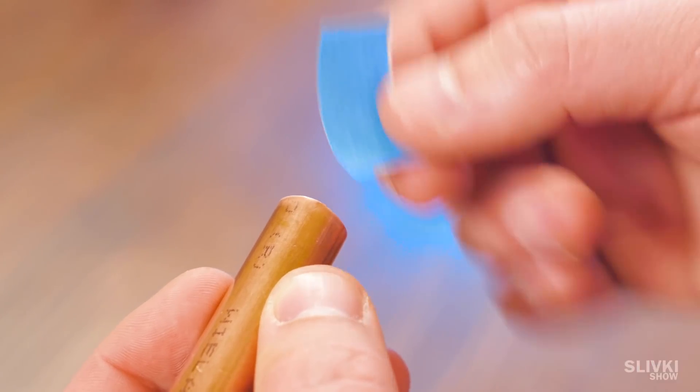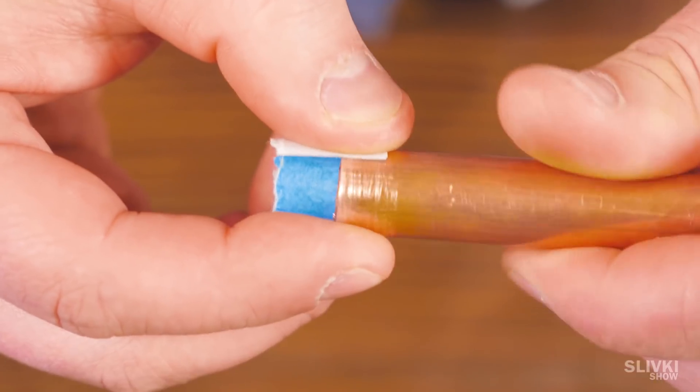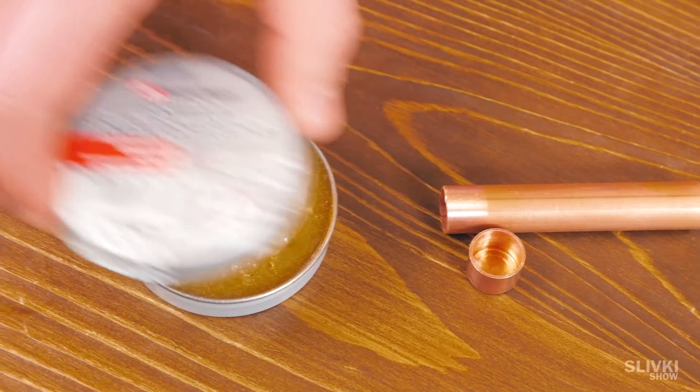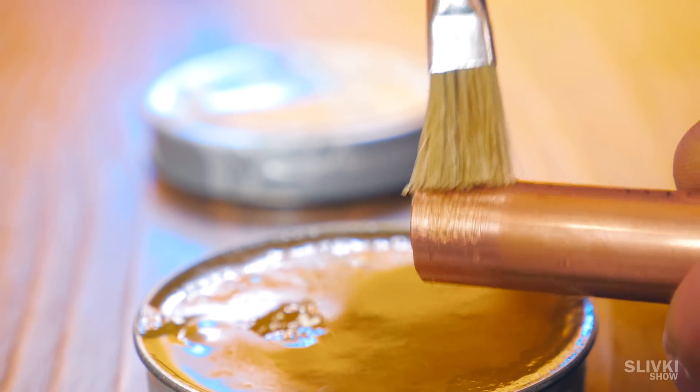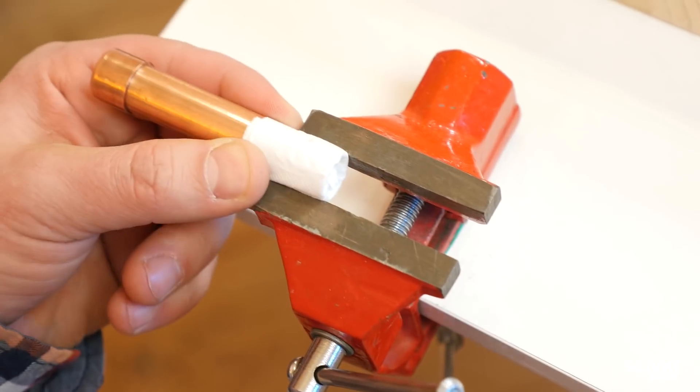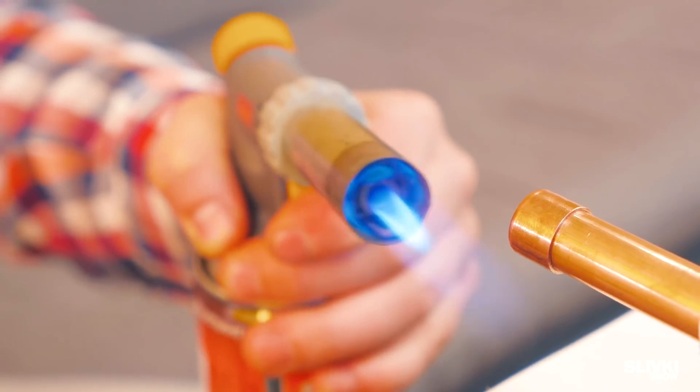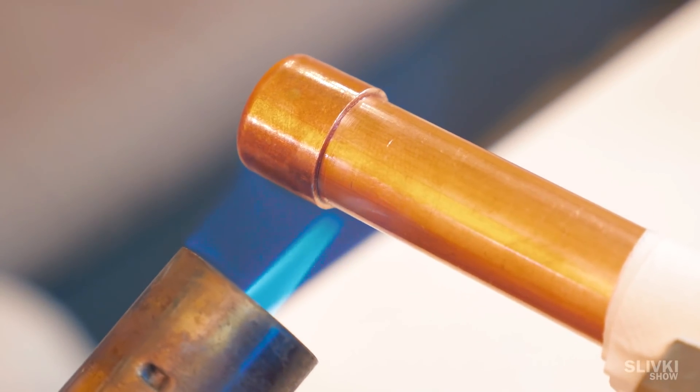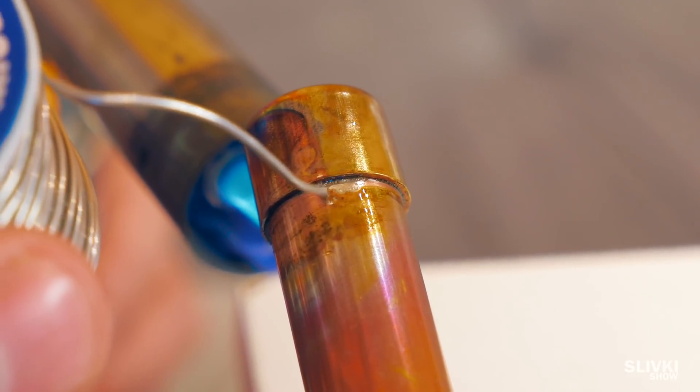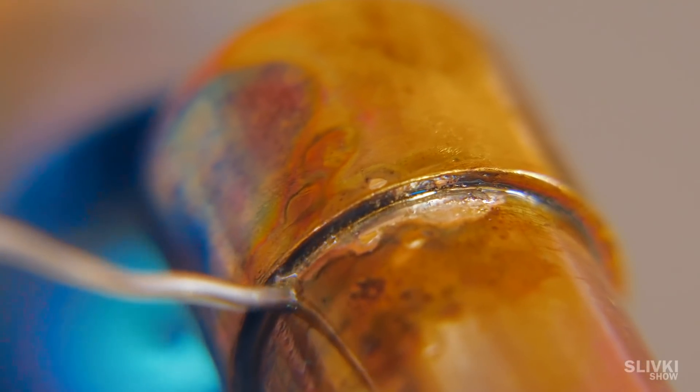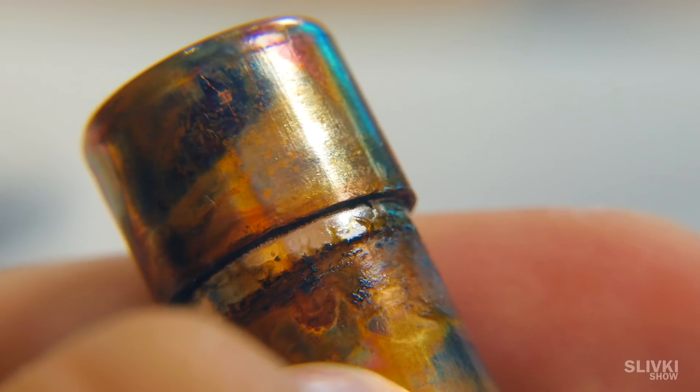Using sandpaper carefully clean all the junction places of pipes and cap. Then we took a special paste for soldering and put on the bare metal. Now we fastened the tube in a vise and with a gas burner carefully heat the plug. After that take the solder and putting it to the place of the joints, solder elements together. We got a durable and hermetic connection.